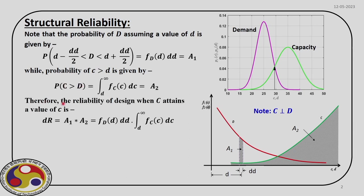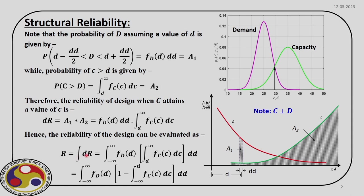We define reliability for this design — dr — as the product of these two areas A1 and A2. So dr equals A1 times A2. Using the expressions already derived, we can estimate this. The total reliability is obtained by integrating dr over the complete domain of the demand curve, from minus infinity to plus infinity.